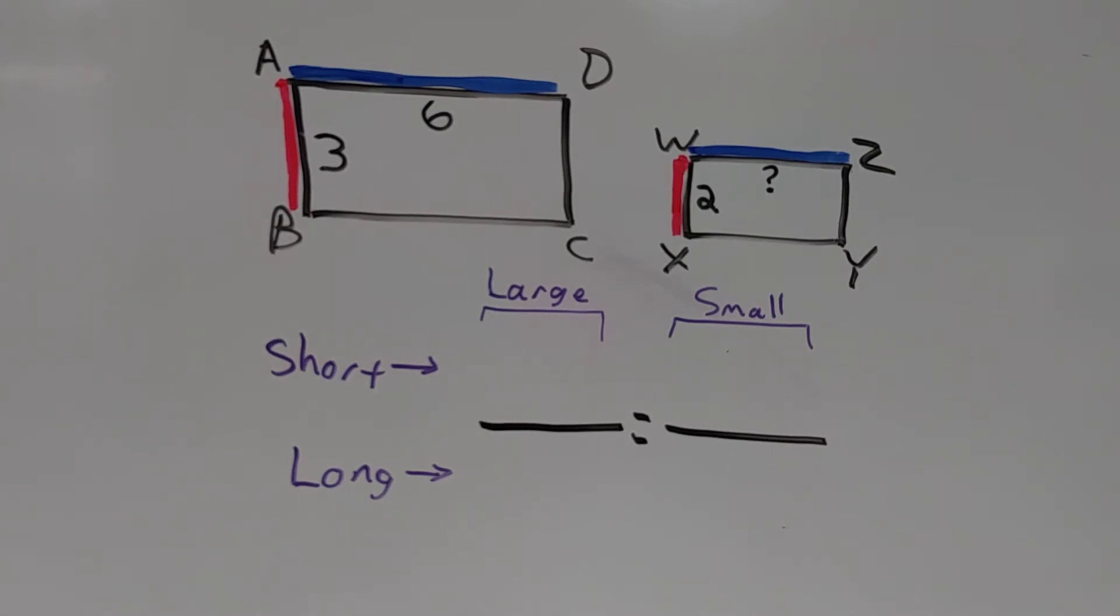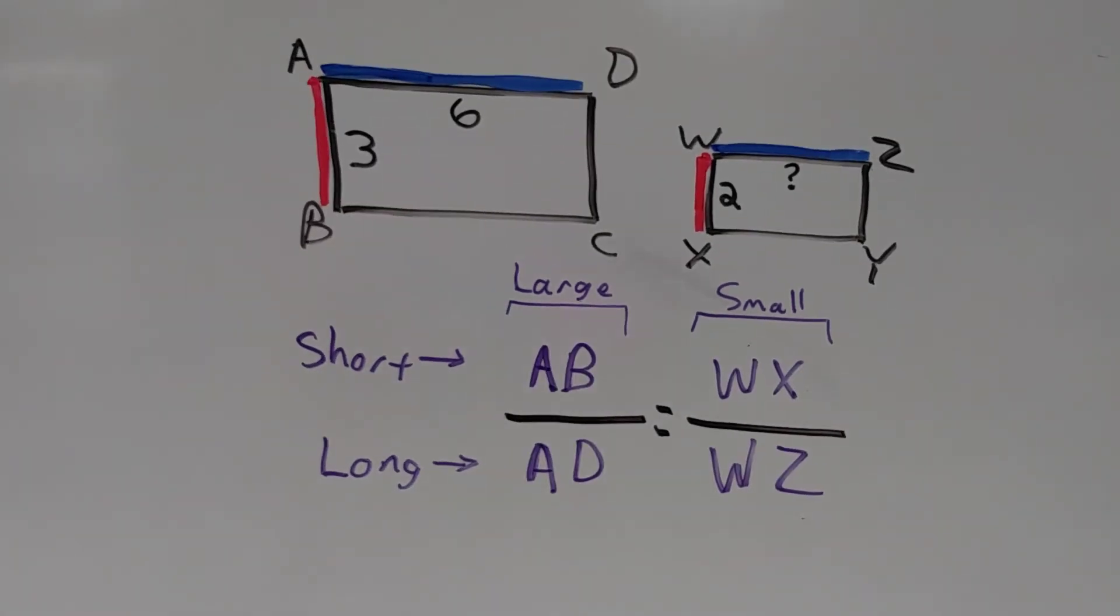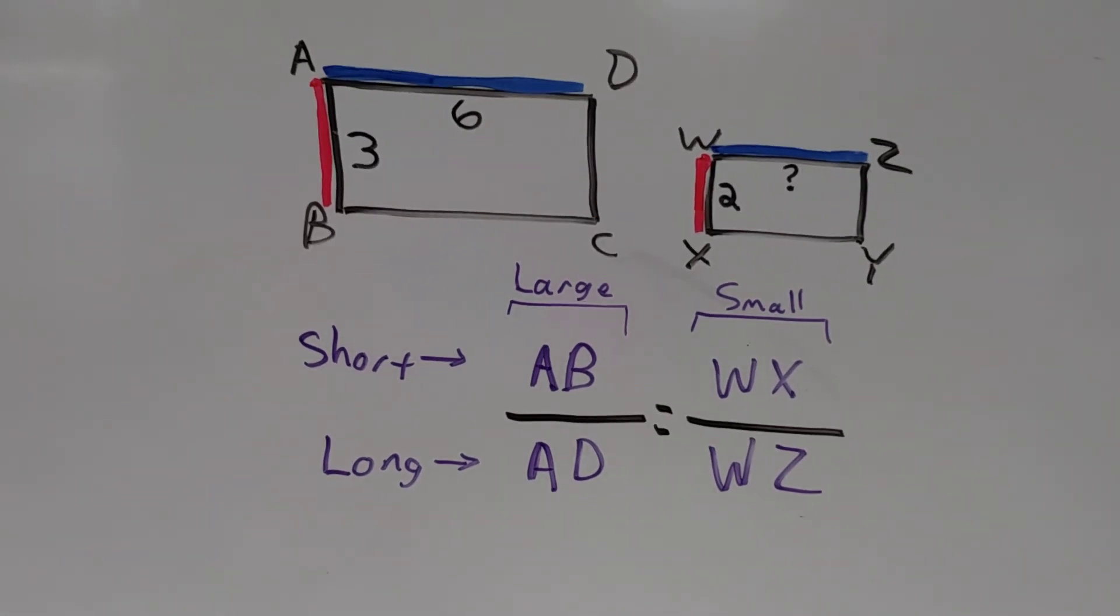For the top of our ratios, we'll use the short sides of the rectangles. For the bottoms of our ratios, we will use the long sides. So now that we know which side goes in which space on this proportion, we can fill in the numbers, and whatever number is unknown, in this case WZ, we'll use a variable.